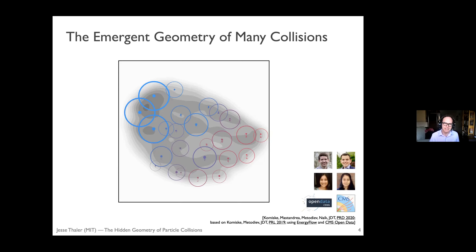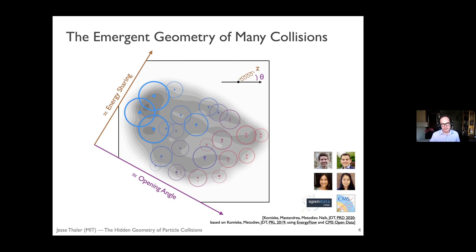This is actually using data from the CMS experiment — they released public data sets. We're taking 30,000 jets from that public data set and arranging those jets in a way that has some geometric structure. It's very difficult to plot all 30,000 jets, so I've highlighted 25 representative jets centered on top of where they are in this gray blob. This emergent geometry actually projects down to the two coordinates that govern Altarelli-Parisi splitting: an energy-sharing variable and an opening angle variable, which are the two primary coordinates involved in the fragmentation of quarks and gluons.